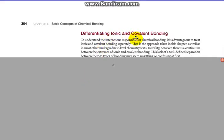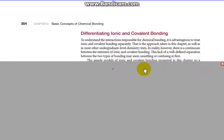To understand the interactions responsible for chemical bonding, it is advantageous to treat ionic and covalent bonding as separate. That's the approach taken in this chapter and other undergraduate chemistry texts. In reality, however, there is a continuum between the extremes of ionic and covalent bonding. This lack of well-defined separation may seem unsettling and confusing at first.